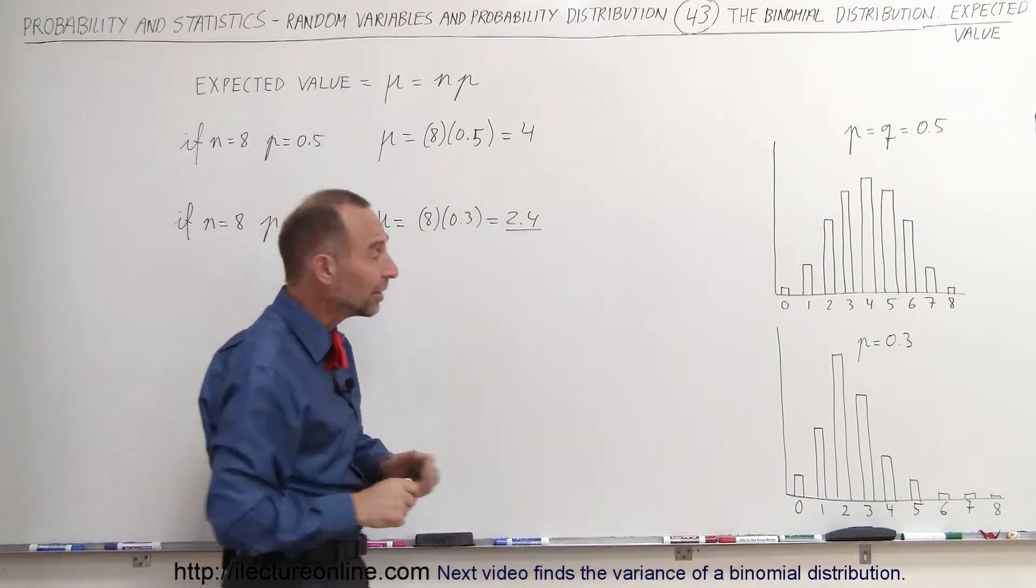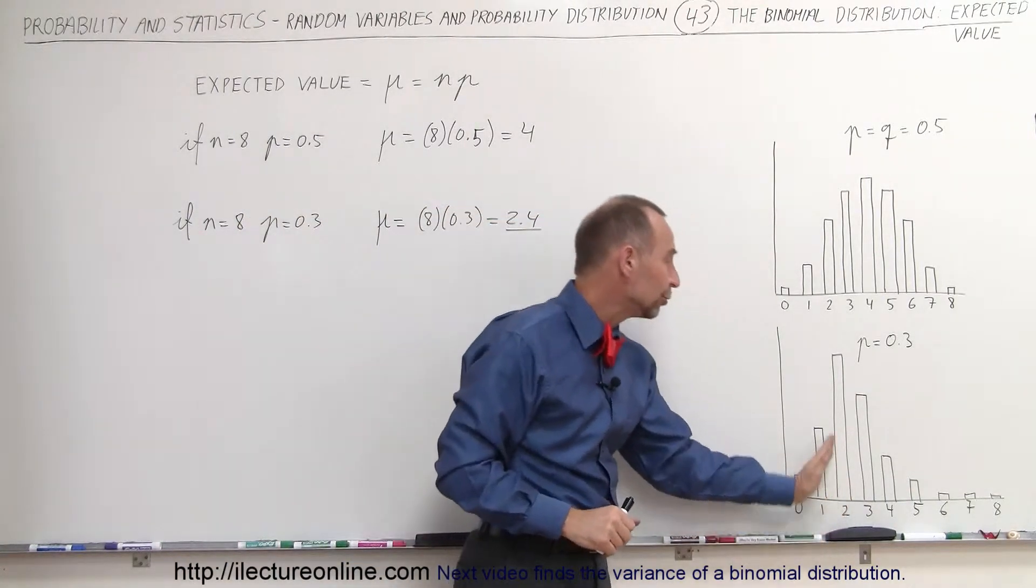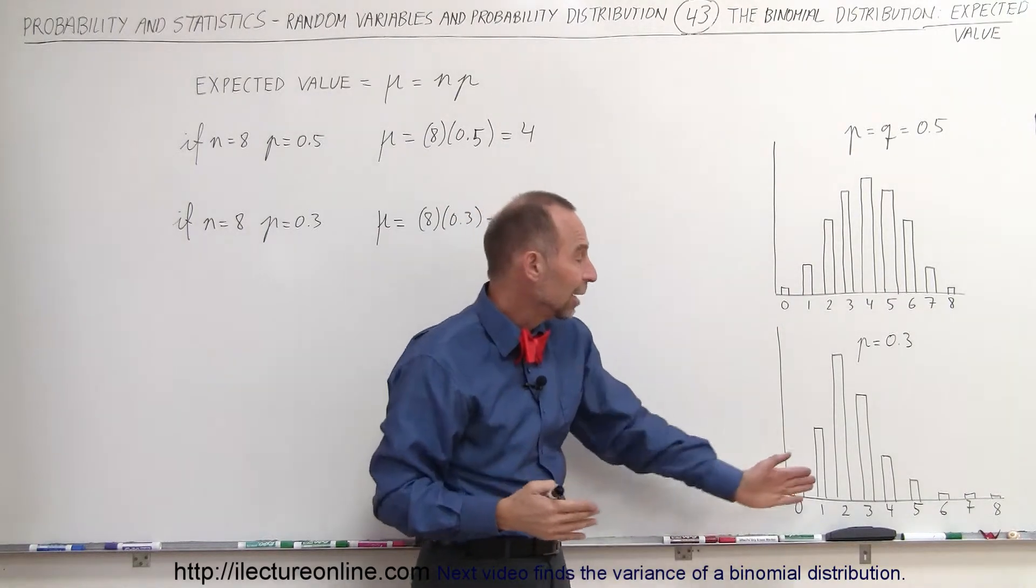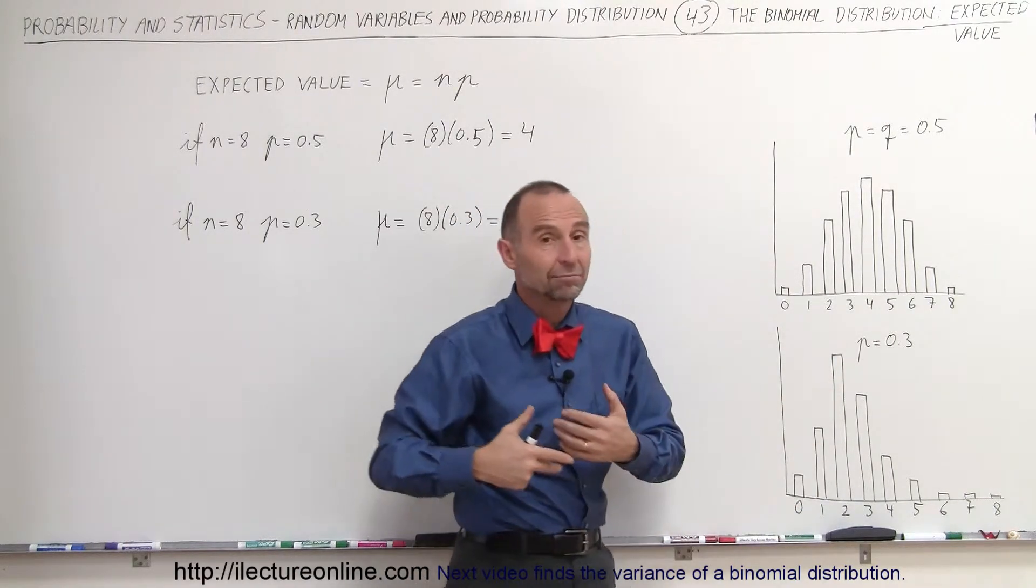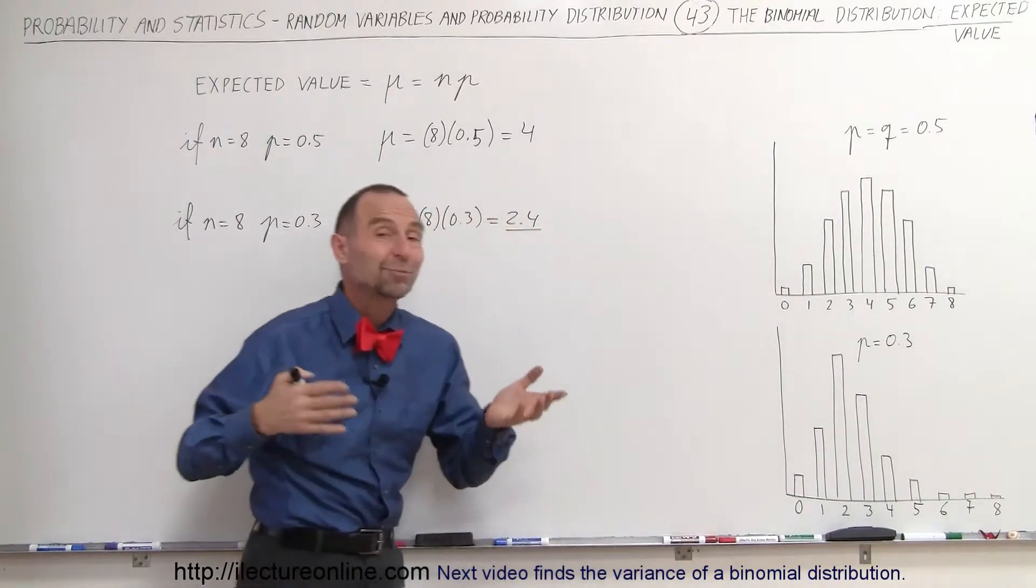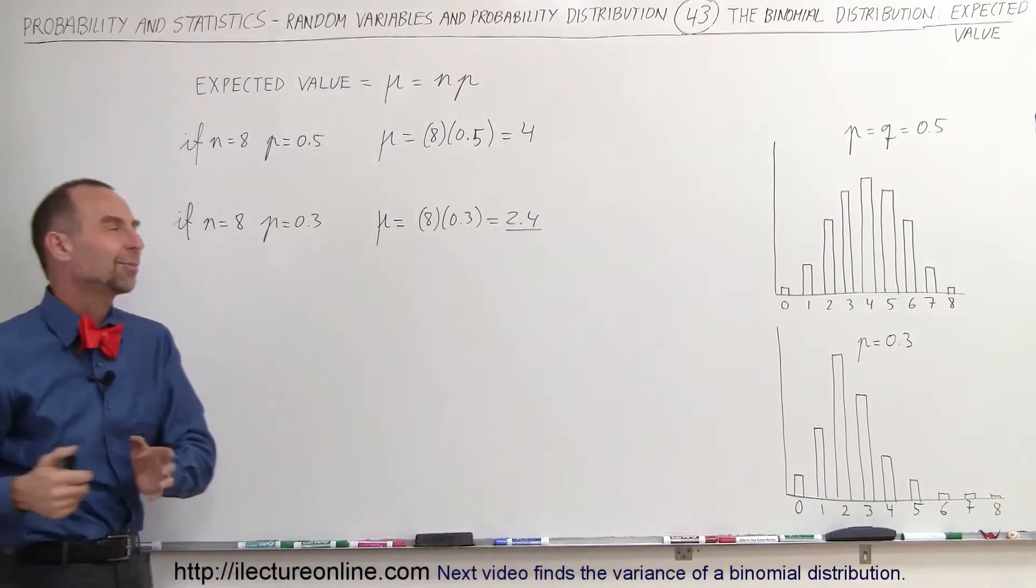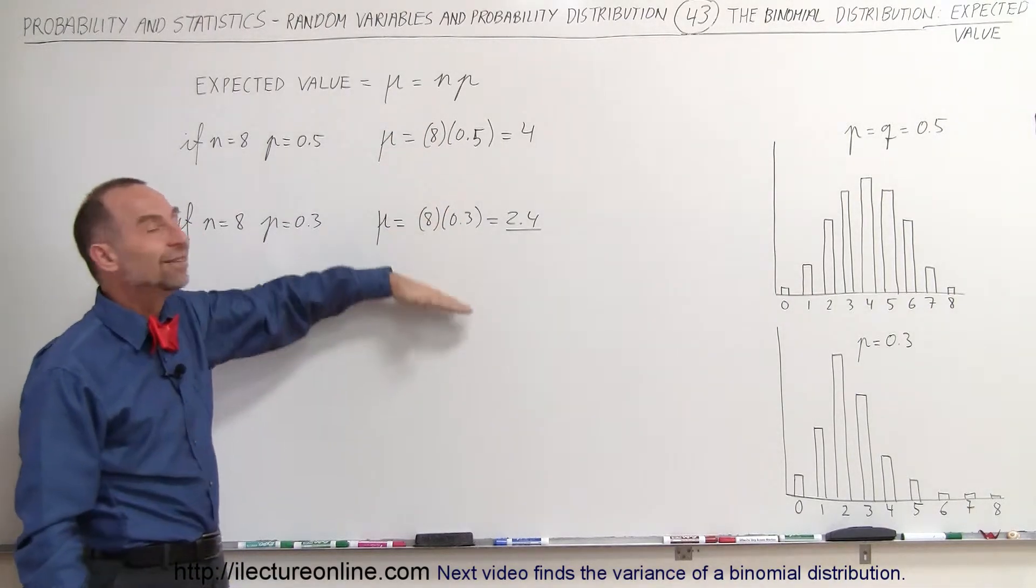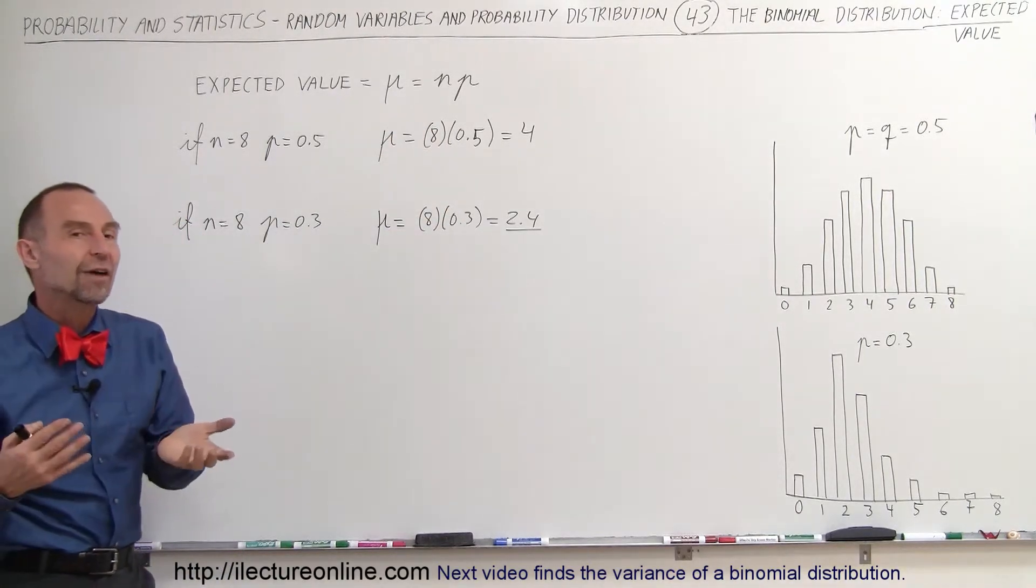Notice that just as we predicted, it's actually a little bit to the right of two. Two is not the most likely value to occur, but 2.4 is. And so we expect that to be the expected value. We expect that to be the expected value, kind of interesting. So anyway, you can see how this is a very easy, quick way to find the expected value.